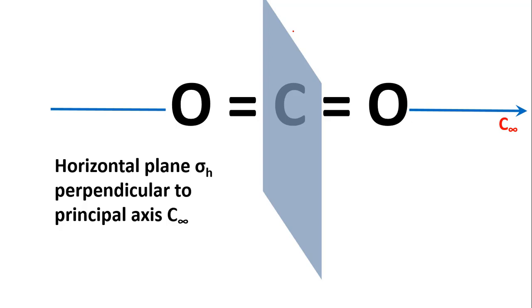There is also a plane perpendicular to the principal axis C∞. Since it is perpendicular to the principal axis, this is sigma H — the horizontal plane of symmetry. To the left of it is one oxygen atom and to the right is another oxygen atom. During reflection about sigma H, the carbon atom does not change its position because it is contained in the plane, while the two oxygen atoms are interchanged.